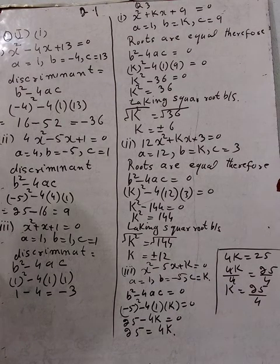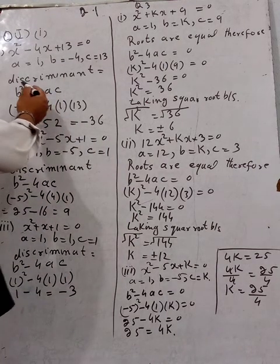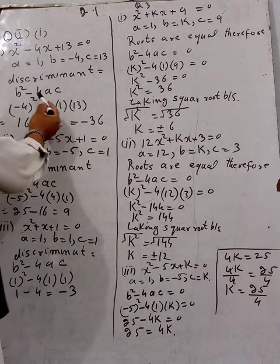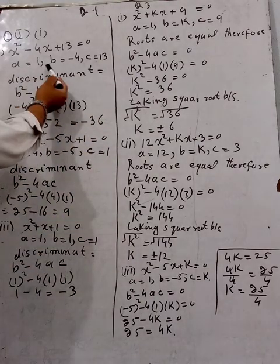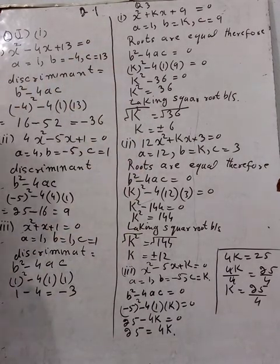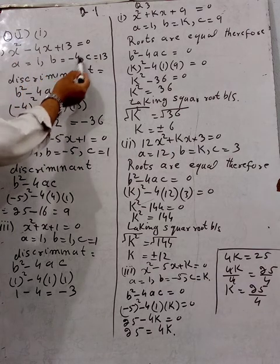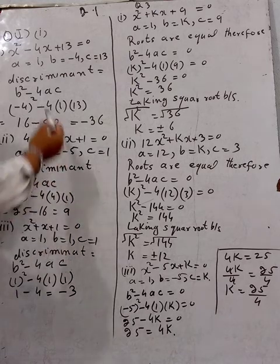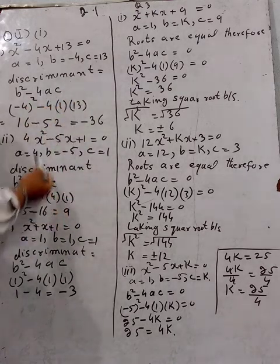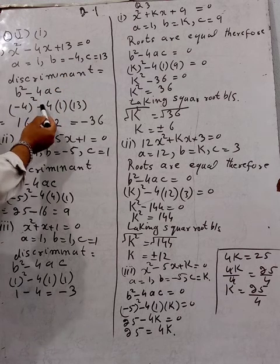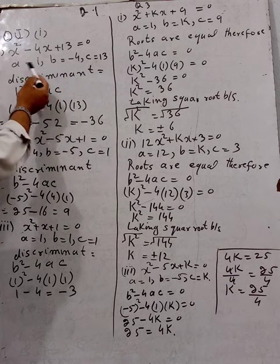The discriminant is b squared minus 4ac. We identify a, b, and c. Here a equals 1, b equals minus 4, and c equals 13. So b squared means minus 4 squared.